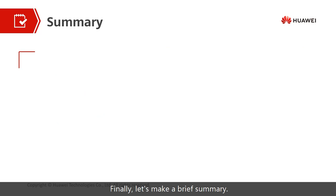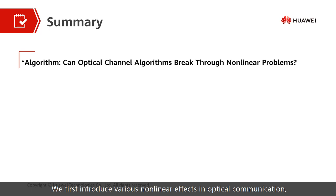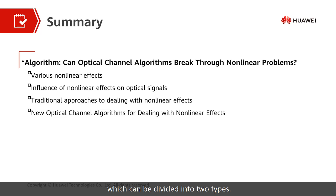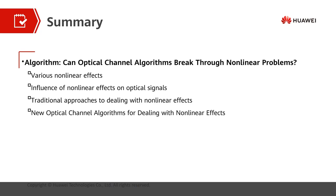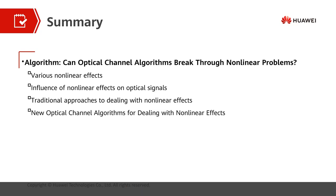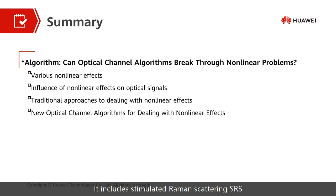Finally, let's make a brief summary. In this chapter, we discussed the non-linear effects of optical communication. Various non-linear effects can be divided into two types: the Kerr effect — including self-phase modulation (SPM), cross-phase modulation (XPM), and four-wavelength mixing (FWM) — and stimulated scattering related to energy transfer, including stimulated Raman scattering (SRS) and stimulated Brillouin scattering (SBS).